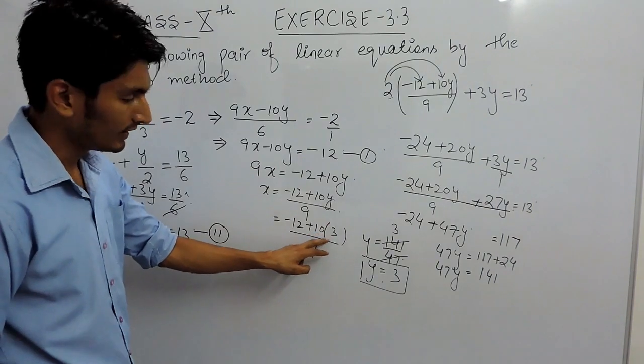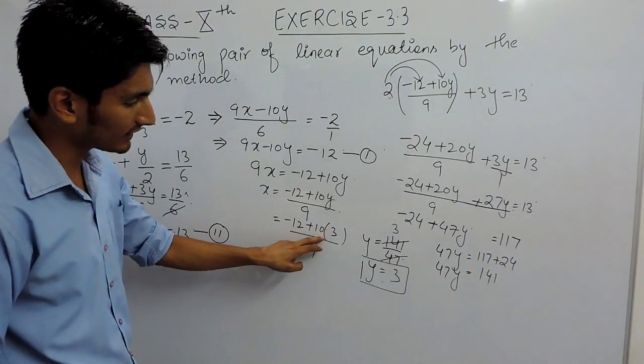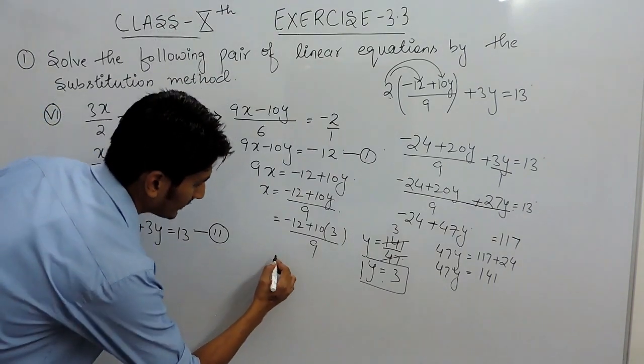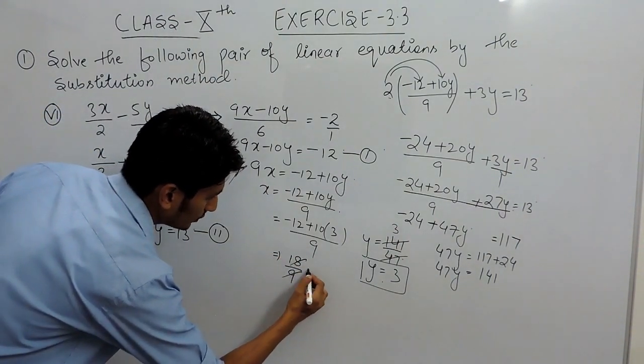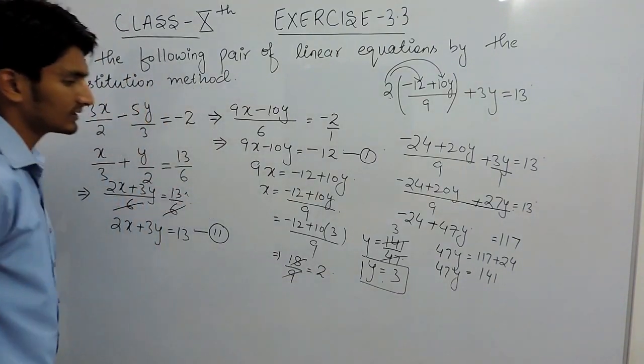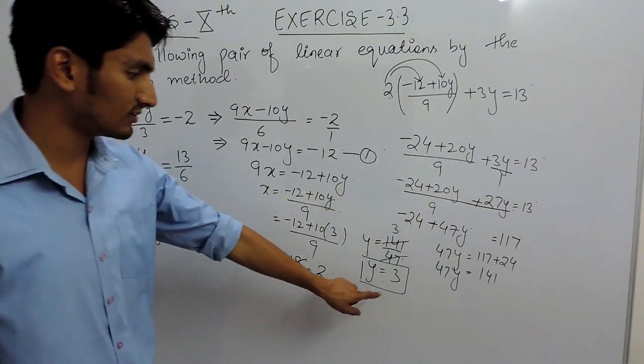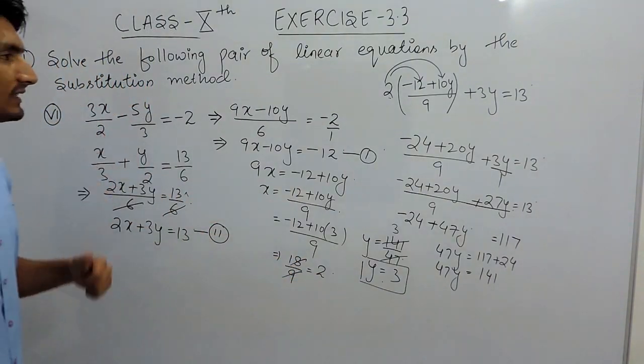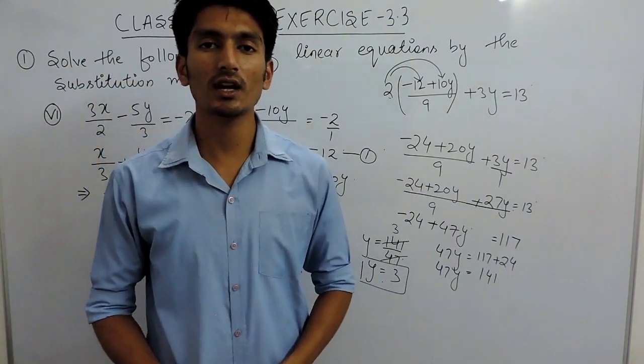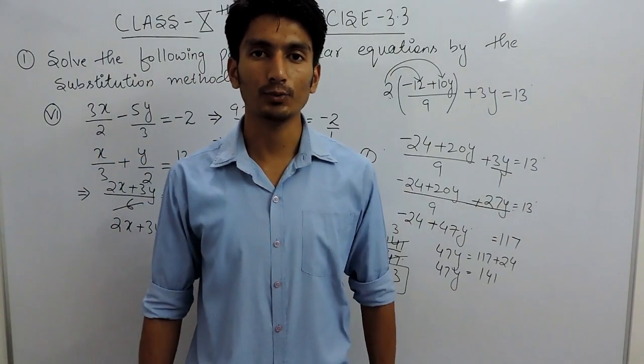When 12 is subtracted from 30, the value is equal to 18 upon 9, so the value is 2. So in this case also the value of y is 3 and the value of x is 2 for these linear equations. This is how you can solve this part also. Thank you.